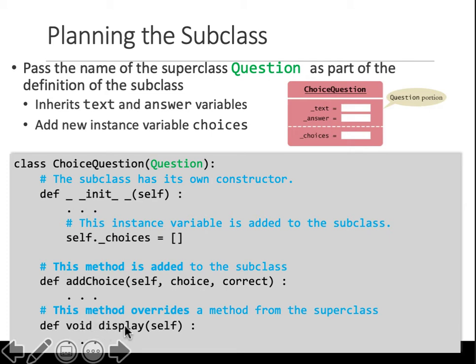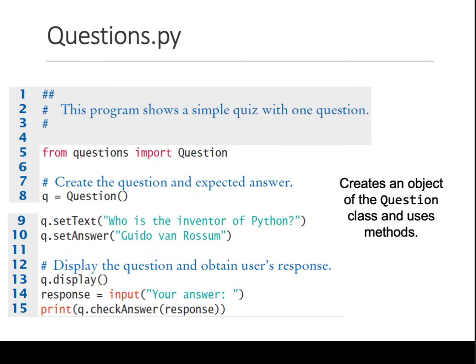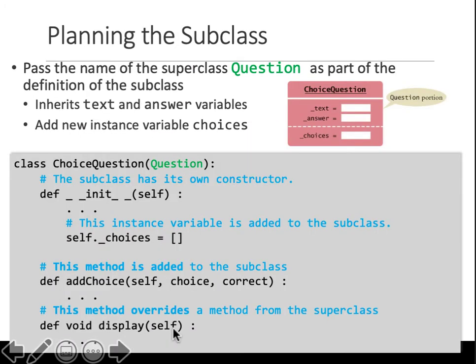If you look at the final method — void display — remember we defined a display function in the question class as well. That display method just printed the text of the question, whatever was set — so just self.text. Here in the subclass, we can display the question and then display all the choices.